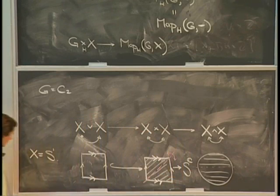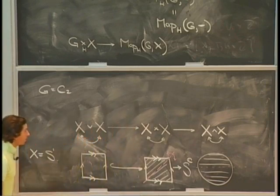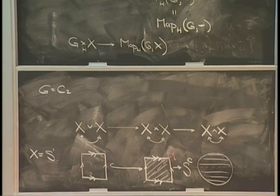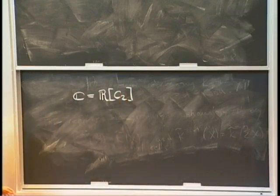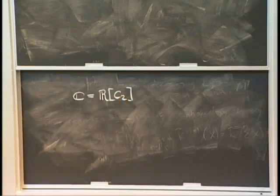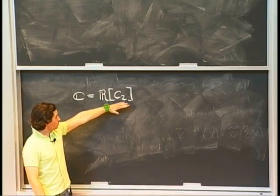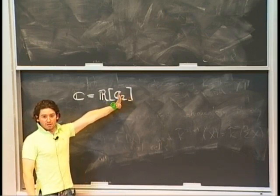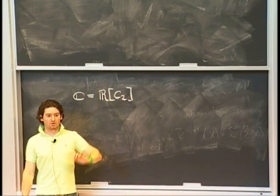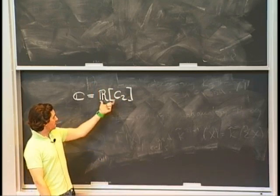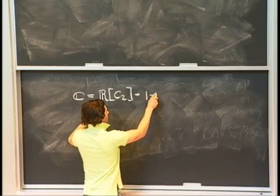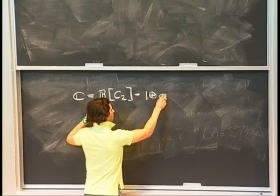The boundary is being crushed to a point, so this is the same as the unit sphere in the complex numbers viewed as a C2 space with complex conjugation. The complex numbers with complex conjugation is actually the group ring itself. I'm working over the real numbers, so representation theory is fairly simple: I have exactly two irreducible representations for the group of order 2 — the trivial one and the real sign representation. This just splits as copies of each of those.